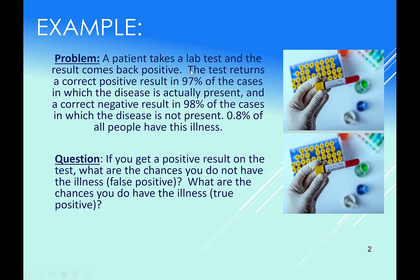Let's say a patient takes a lab test — an actual test for a disease. The test returns a correct positive result in 97% of the cases, and a correct negative result in 98% of the cases. So it gives a positive result where the disease is actually present 97% of the time, and gives a negative result when the disease is not present in 98% of the cases. Our problem is that we want to know if the disease is present — we're doing the test to determine whether or not the disease is present. These stats are actually backwards, which might hurt your brain at first.